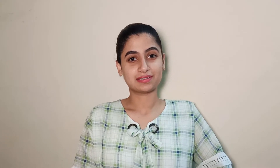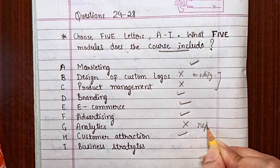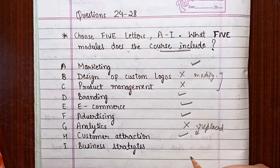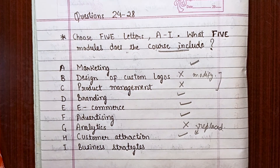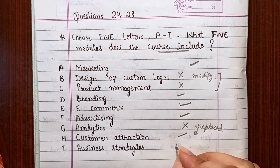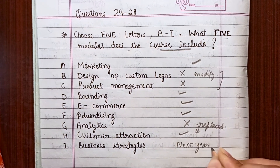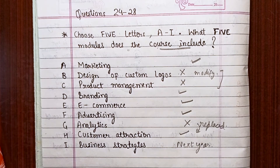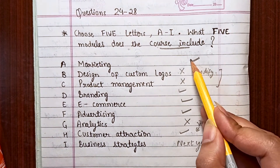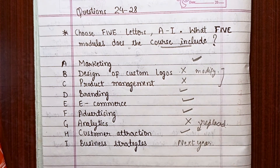So let's move on to the practice section of the listening module for MCQ questions. You and I will solve the questions simultaneously so that you understand how to attempt the question, where the speaker says what, and how to grab the answers. The practice question says: Choose 5 letters from A to I — what 5 modules does the course include? We need to identify any 5 modules that the course includes.